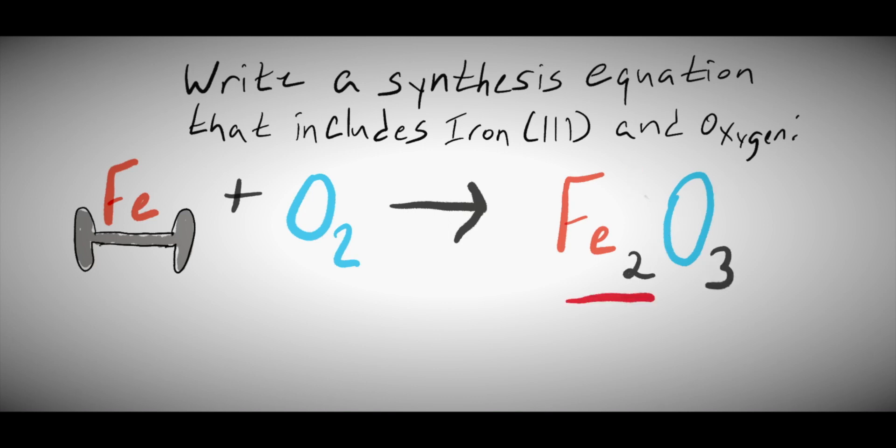As you can probably guess, this is not balanced. Starting with iron atoms, we have 2 on the product side and only 1 on the reactant side. To fix this, we add a coefficient of 2 on the reactant side. Next, we balance out our oxygens.